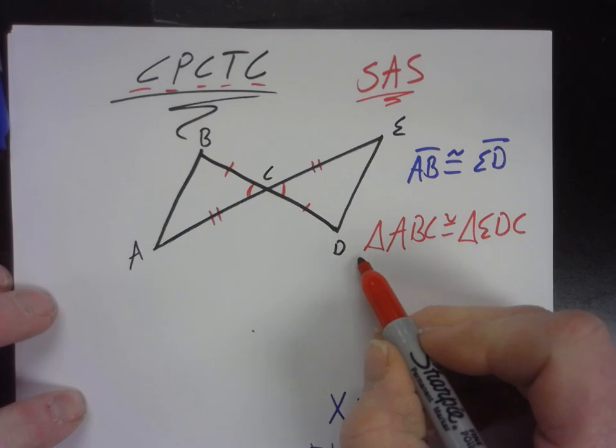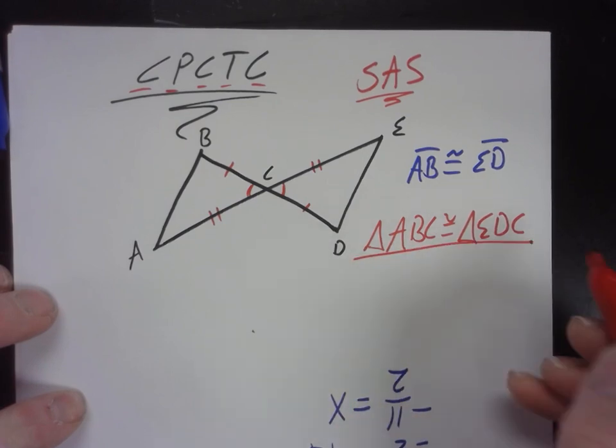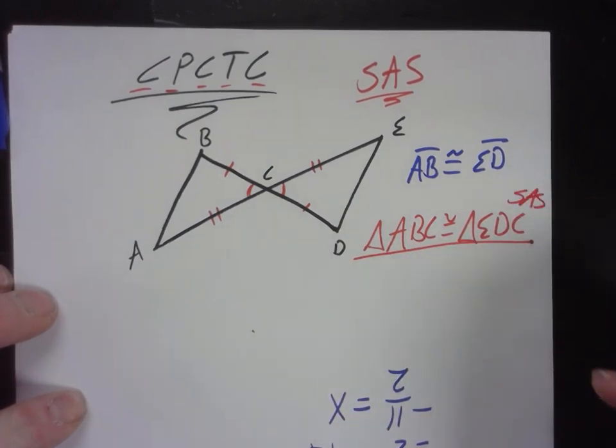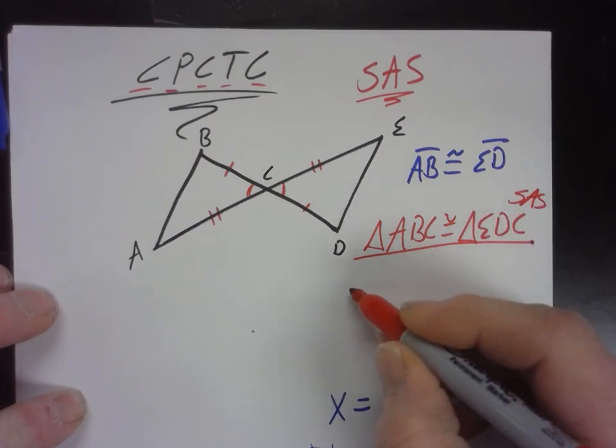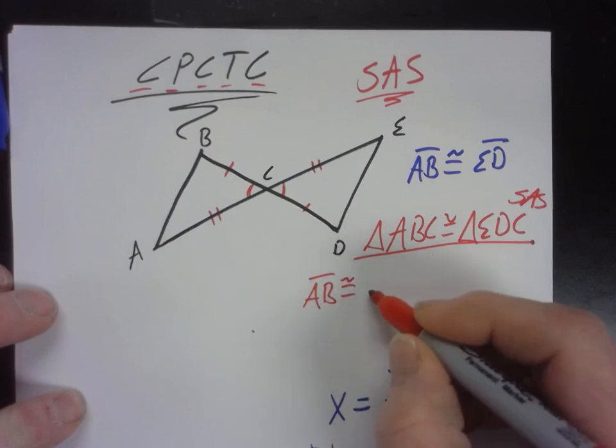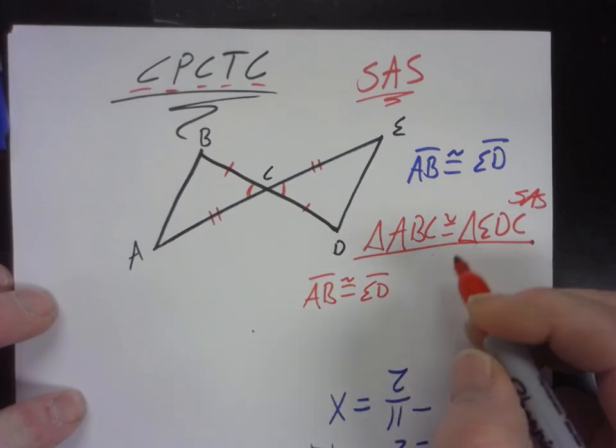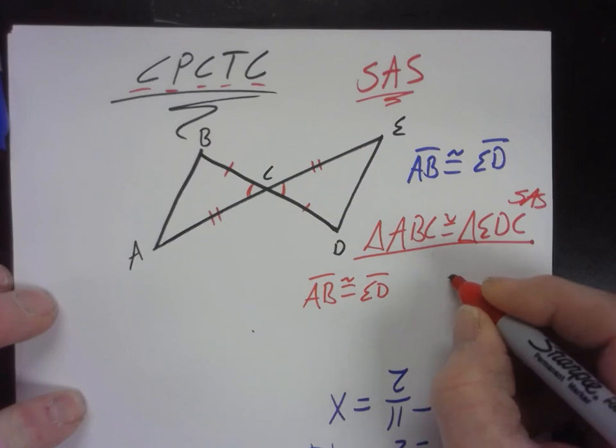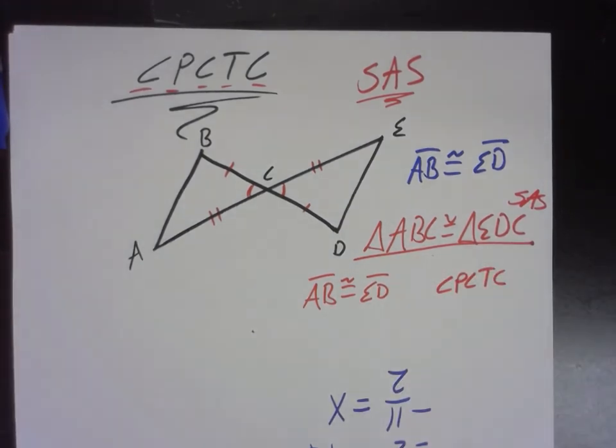That all corresponding parts of congruent triangles are congruent. So after you say that these two triangles are congruent by side angle side, then you can say your statement would be, okay, AB, segment AB is congruent to segment ED, and your reason is the CPCTC, corresponding parts of congruent triangles are congruent, which you are welcome to write out completely or abbreviate, whichever I'm guessing you'll abbreviate. What do you think? Okay. Does that help on the one on the worksheet we did?